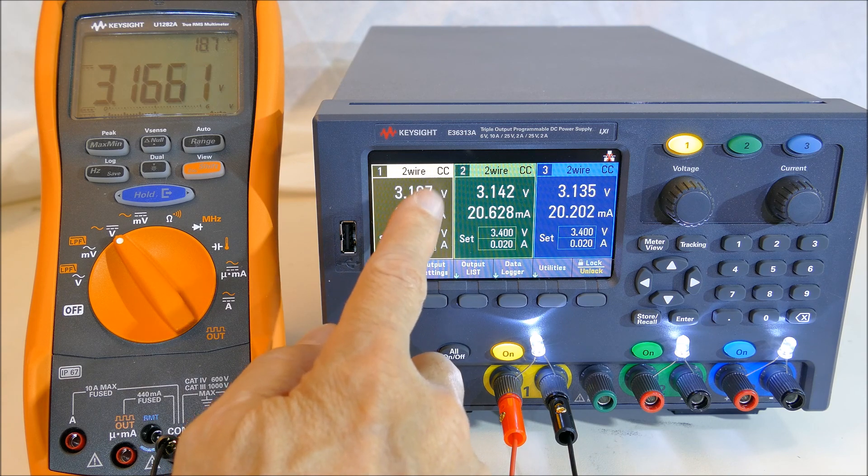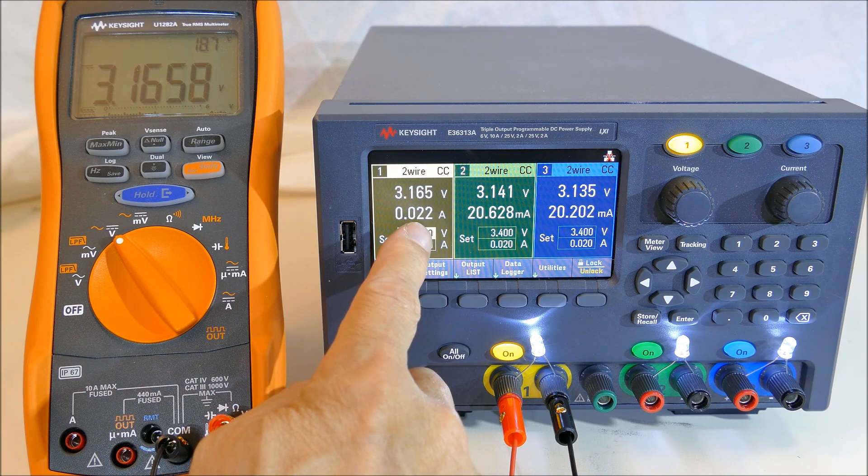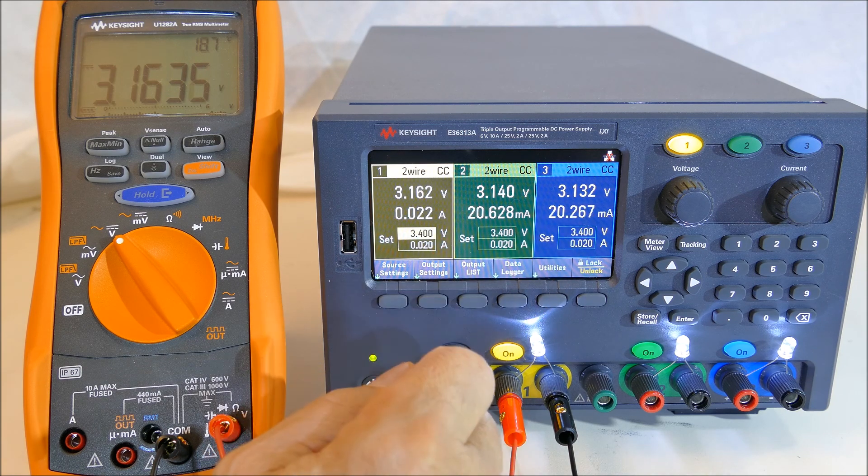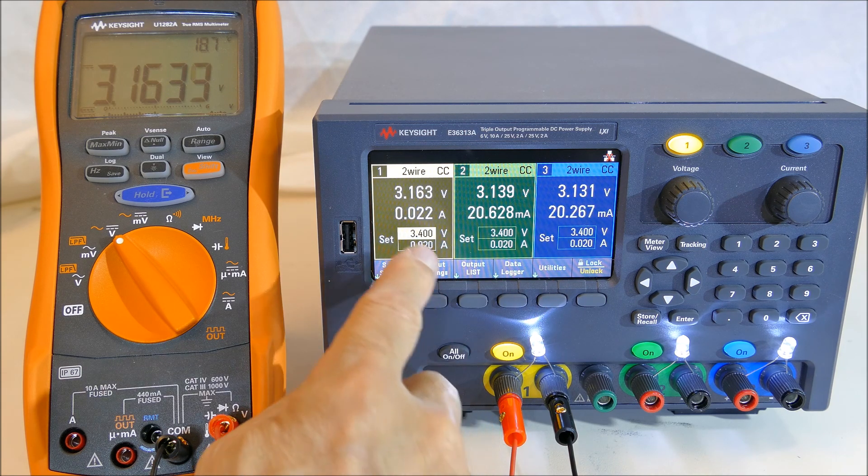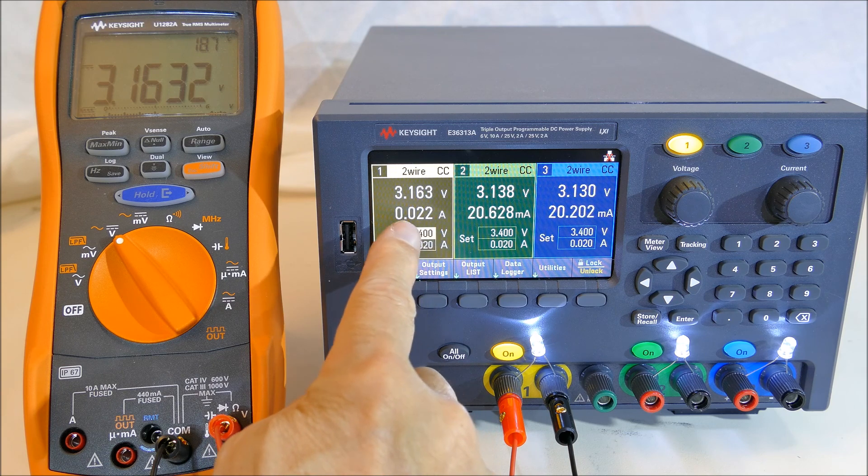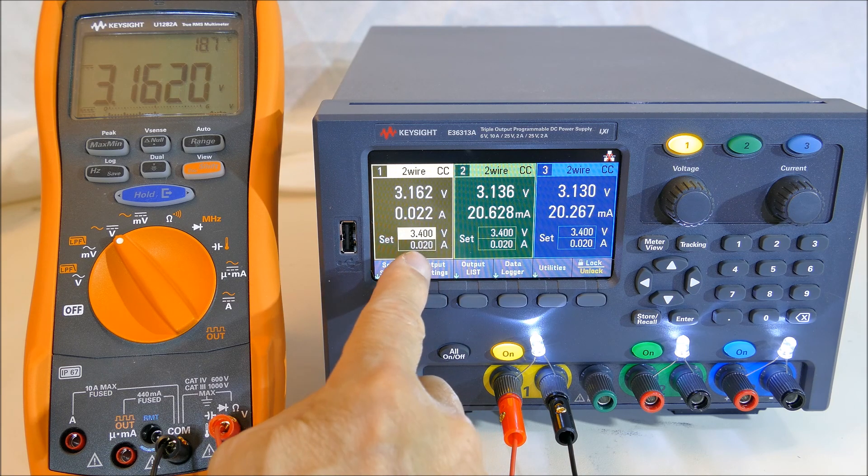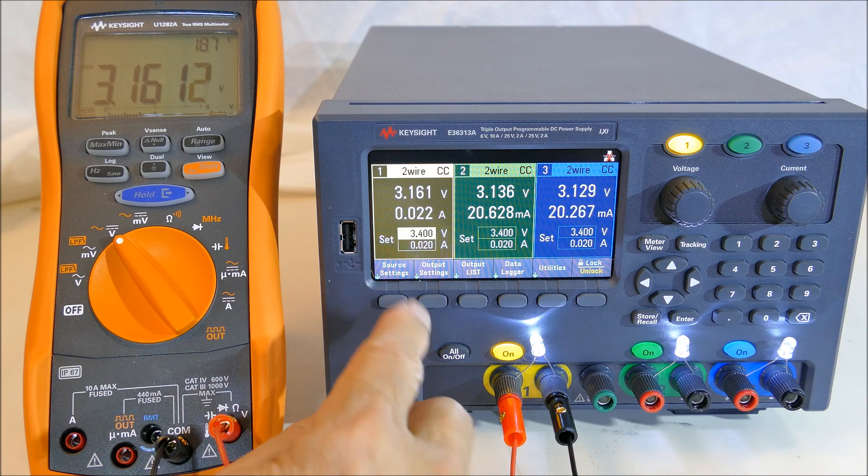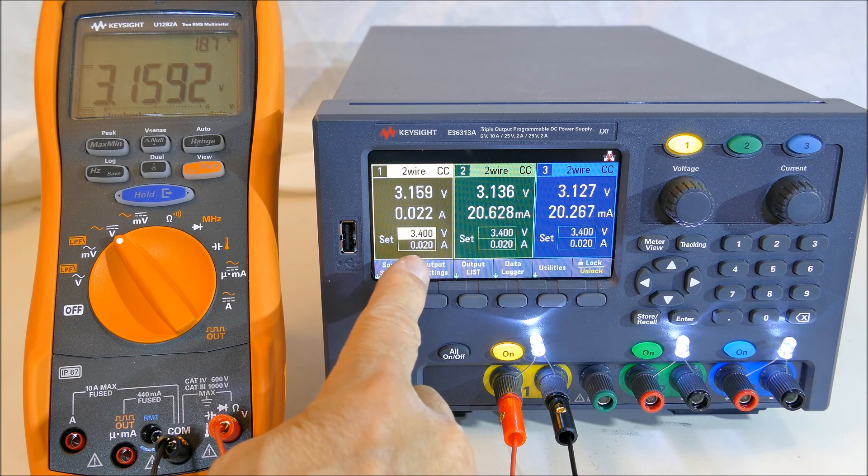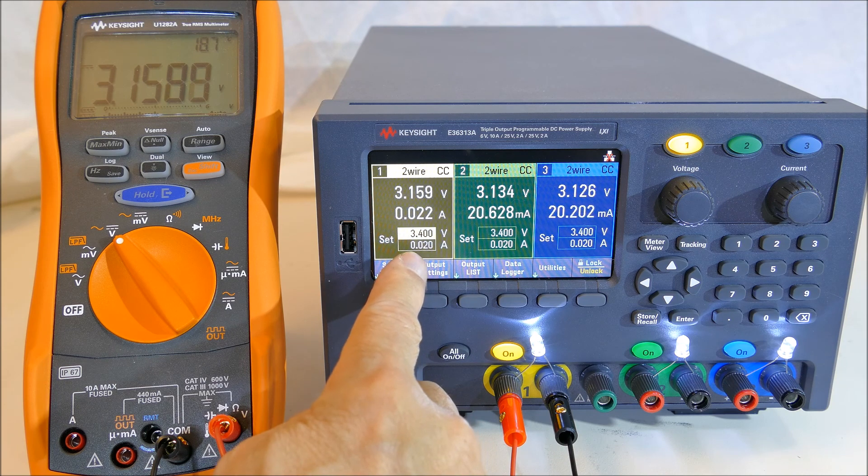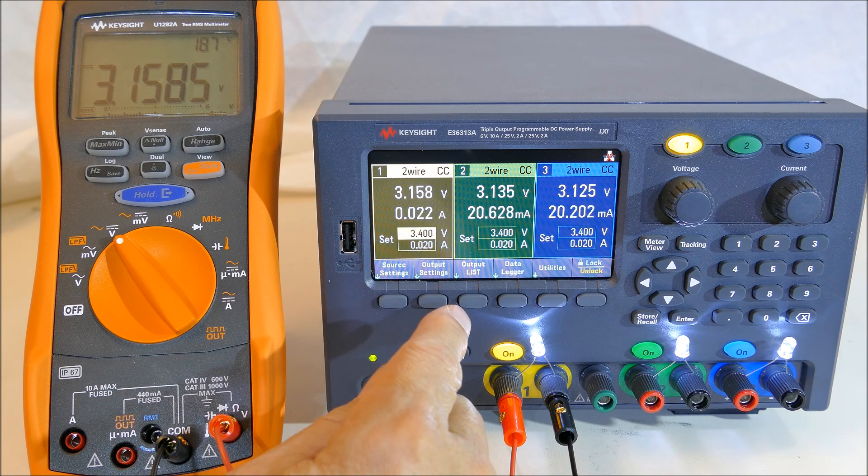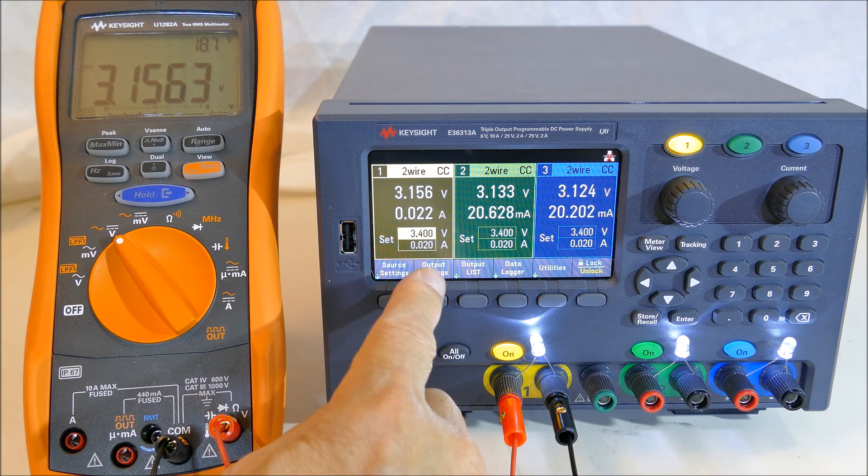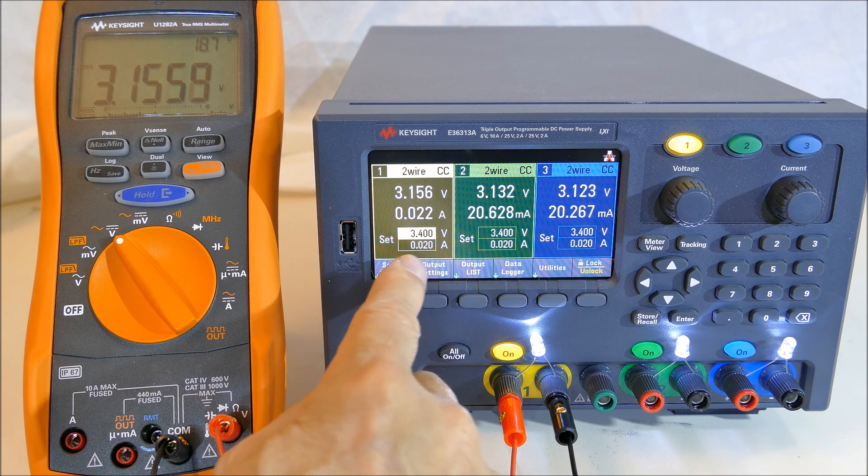Constant current is cutting in at about 22 milliamps here, 20.6 milliamps there, and 20.2 milliamps there. This is off by about 2 milliamps from what I've set here. But 2 milliamps on a 10 amp power supply represents 0.02 percent of 10 amps, so it's a fairly accurate setting.